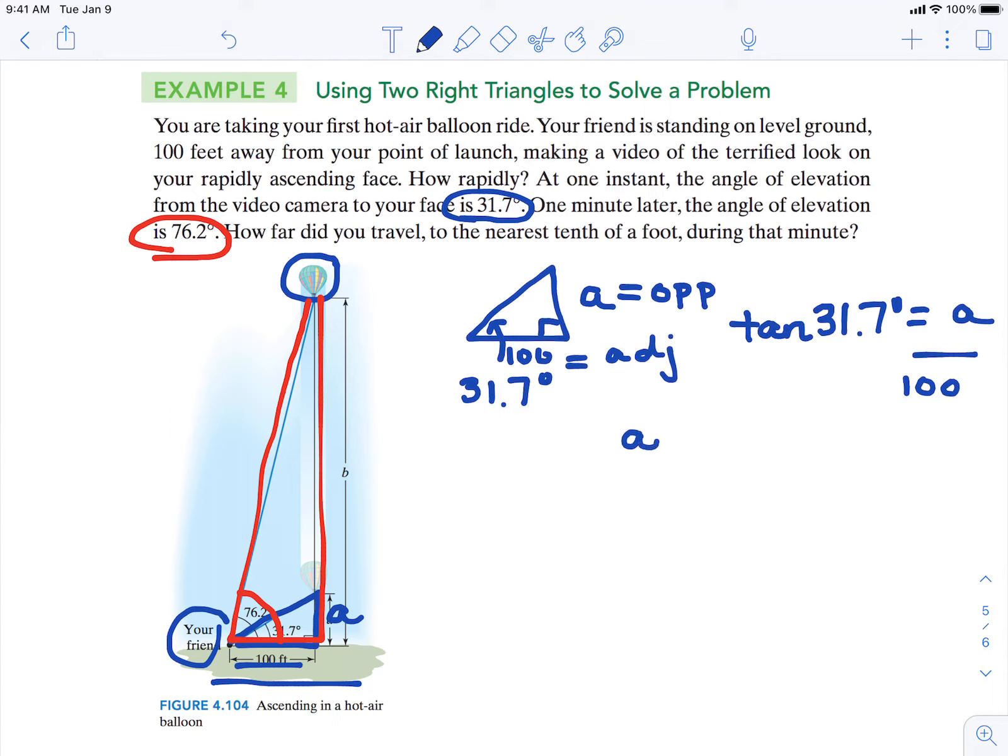So we're going to multiply both sides by 100. Then we would type this into our calculator and make sure we're in degree mode.